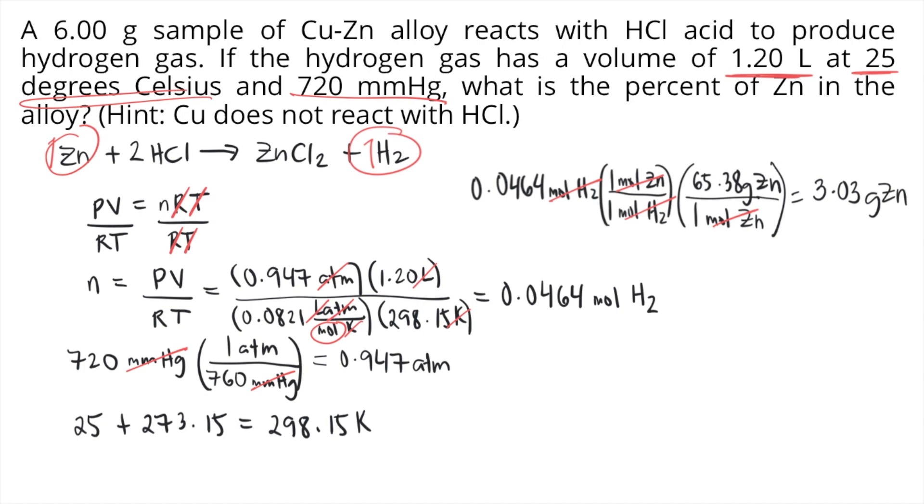Now solve for the percent zinc in the alloy: (mass of zinc / mass of alloy) × 100. Substituting: 3.03 grams / 6 grams × 100 = 50.5 percent zinc. The answer is 50.5% zinc.